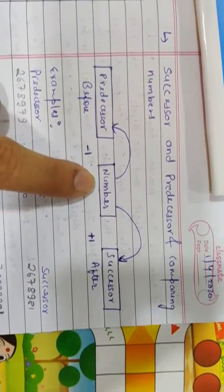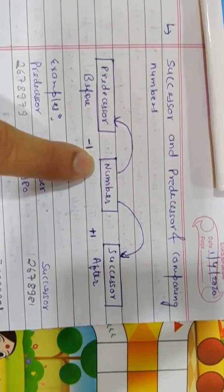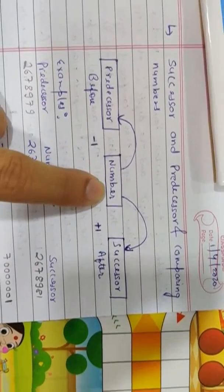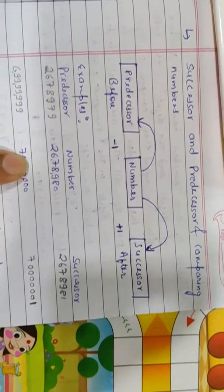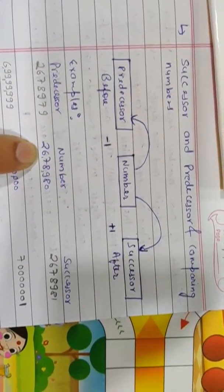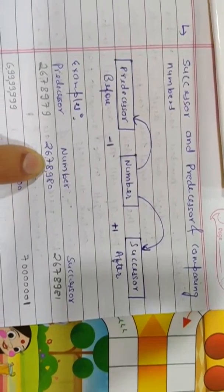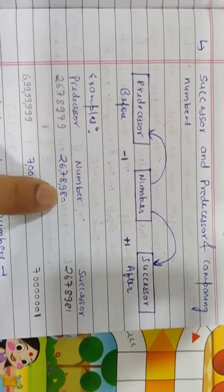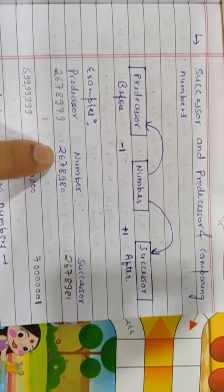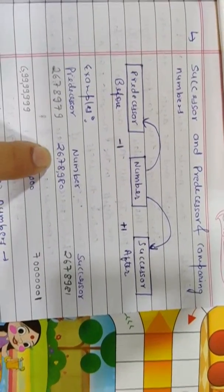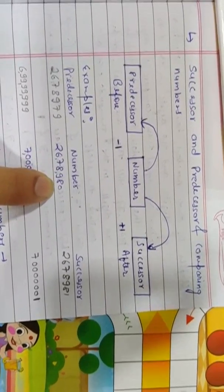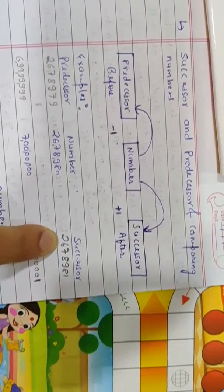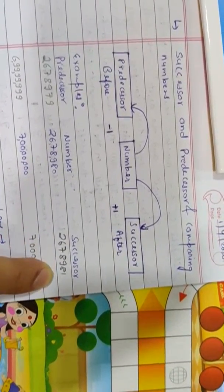So whatever the number I give you, you can now find out successor and predecessor. Let's have one more example. We have one large number: 26,78,980. The successor would be plus 1. So we just add 1 to the given number: 26,78,980 plus 1 equals 26,78,981. So the successor of 26,78,980 would be 26,78,981.